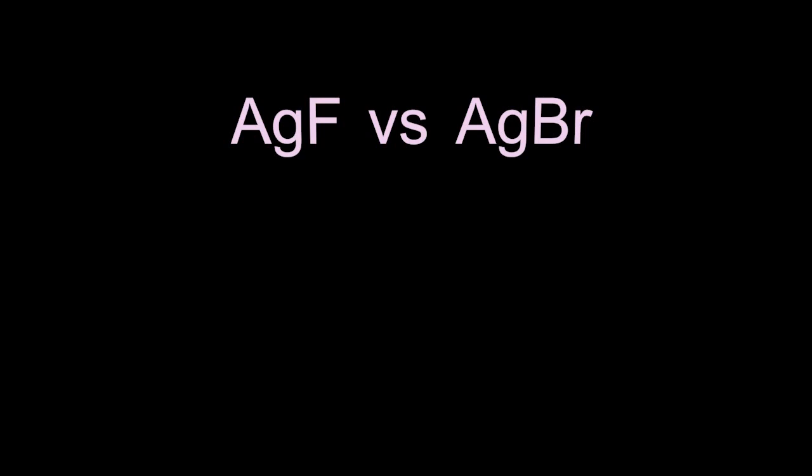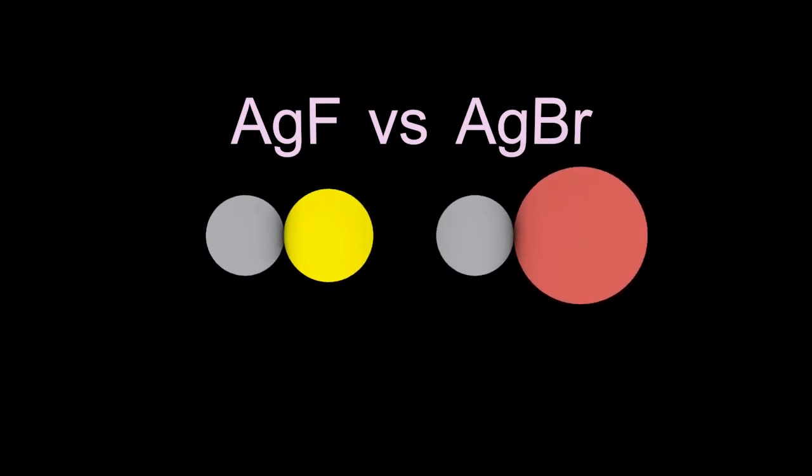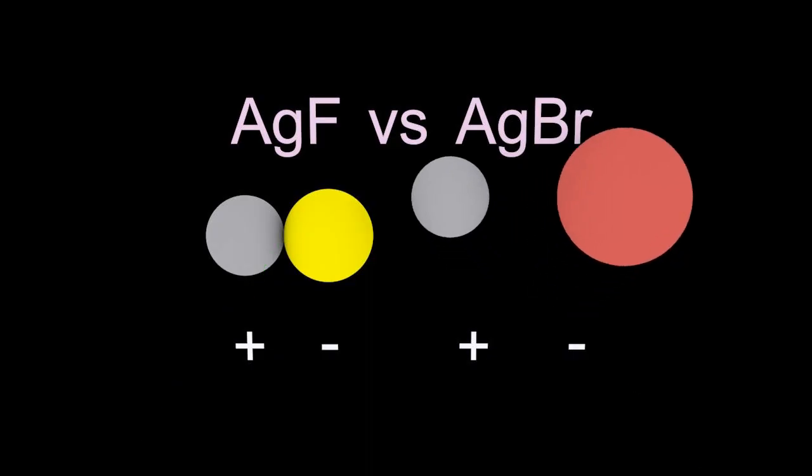that minus 4 charge really is important here. So silver fluoride, silver bromide, which has the lowest lattice energy. Silver bromide, that large bromide ion is less attractive than the fluoride ion.